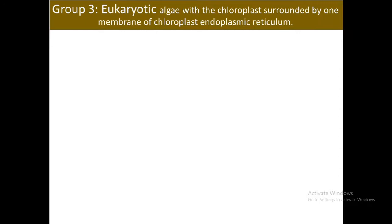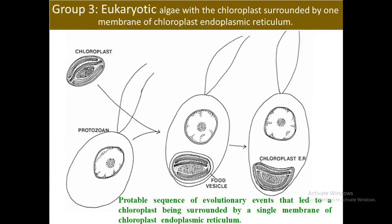Group 3: Eukaryotic algae with chloroplast surrounded by one membrane of chloroplast endoplasmic reticulum — the only algal group with one membrane of chloroplast endoplasmic reticulum and one membrane of chloroplast. Chloroplast endoplasmic reticulum evolved when a chloroplast from a eukaryotic alga was taken into a food vesicle by a phagocytotic euglenoid, apicomplexan, or dinoflagellate. Normally the cell would have digested the chloroplast as food; however, in this case the chloroplast remained in the cytoplasm of the host as an endosymbiont. The host benefited by receiving photosynthate from the endosymbiotic chloroplast.